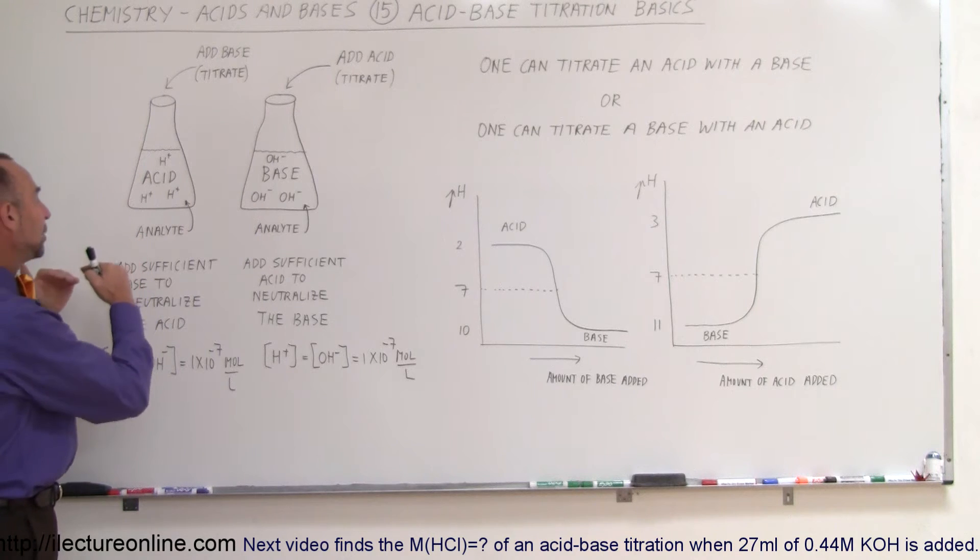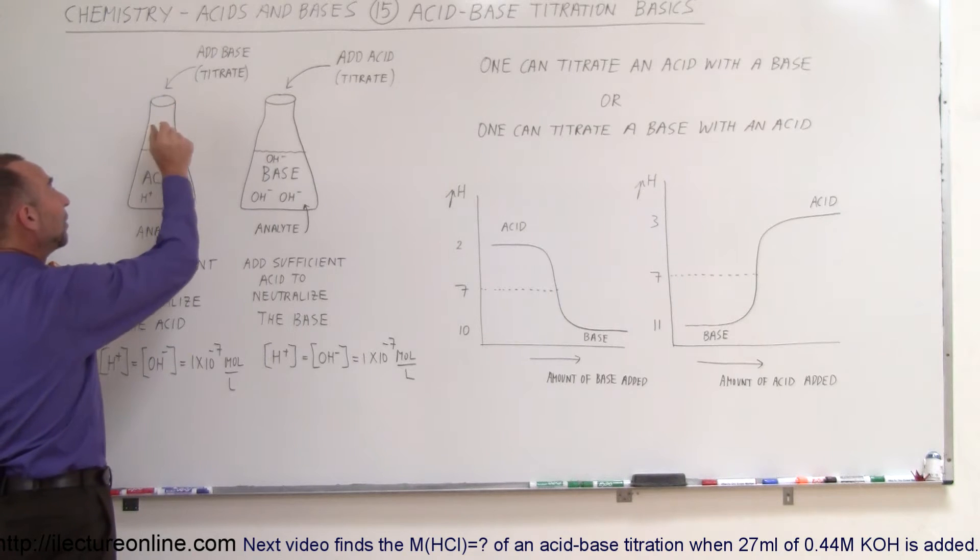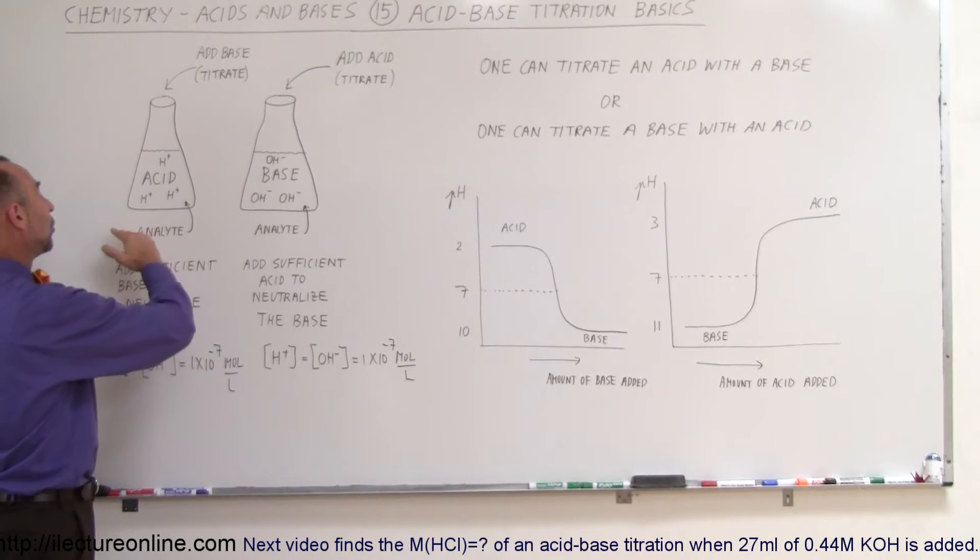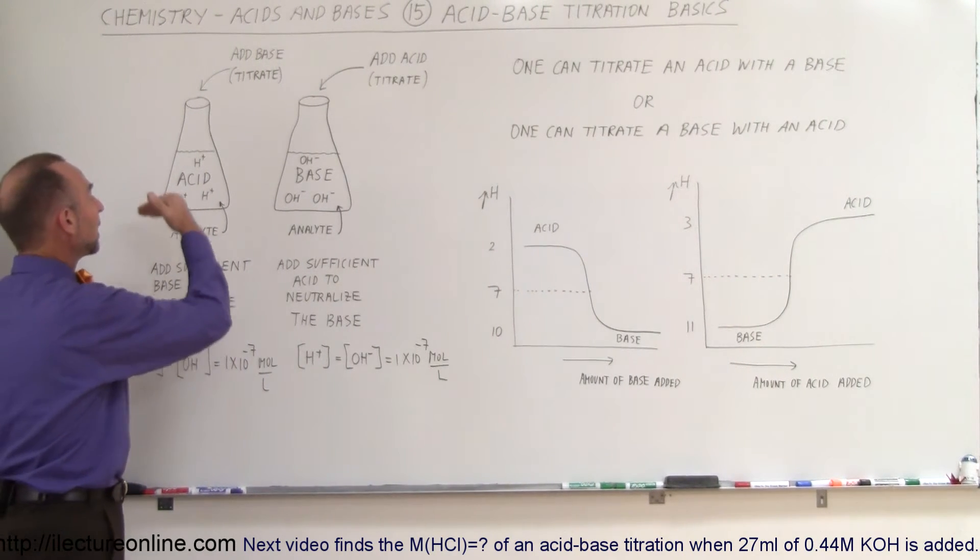At that point, the acid has been neutralized. We add a known quantity of the base in small volumes, maybe just one drop at a time. By doing that, we slowly raise the pH until it reaches 7.